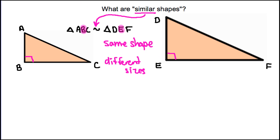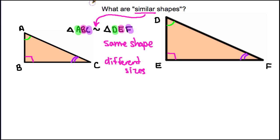Next we look at angle A, marked with one line. Since A comes first in triangle ABC and D comes first in triangle DEF, the corresponding angle to A is angle D. Similarly, angle C is marked with two lines and corresponds to angle F, since both come last. So the first thing about similarity is that all angles have the same measures — knowing angle A tells you angle D, and so on.